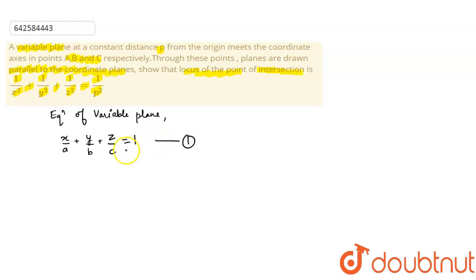Mark this as equation number 1. So now, plane 1 is at a constant distance from the origin p, correct?